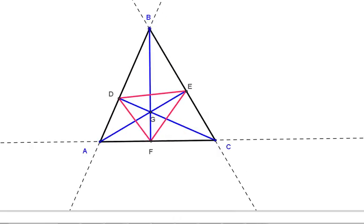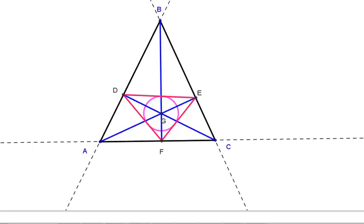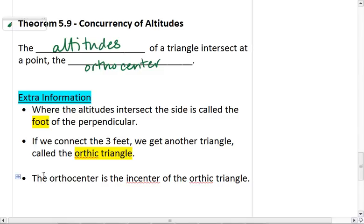What this means is that G is the center of the inscribed circle. Here on your screen, you have the inscribed circle to triangle DEF. Remember, inscribed just means it just touches the sides, doesn't pass through them. G is the center of that circle. The orthocenter is the incenter of the orthic triangle.